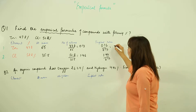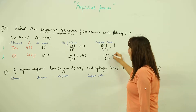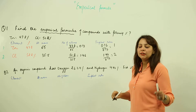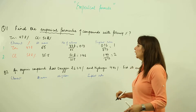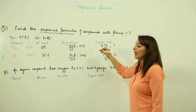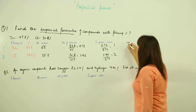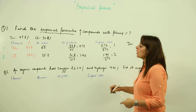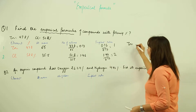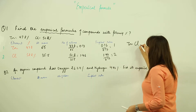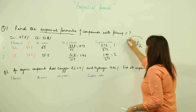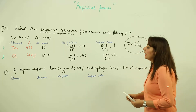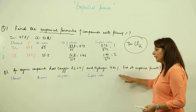Dividing both quantities by 0.73, we get a ratio of 1 and 2. So zinc is 1 and chlorine is 2, giving us the empirical formula ZnCl₂.